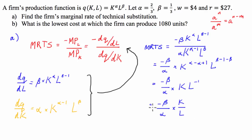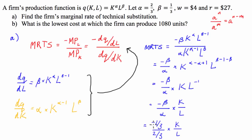Now I'll substitute in the values for alpha and beta. Beta is 1/3 and alpha is 2/3, so we get negative 1/3 divided by 2/3, times K over L. Now negative 1/3 divided by 2/3 is the same as negative 1/3 times 3/2, which gives us negative 1/2. So this becomes negative K divided by 2L.